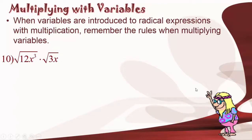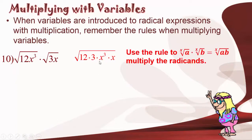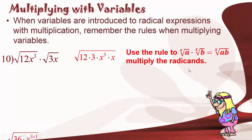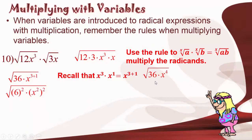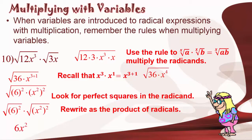Reviewing example number 10: we put the two radicals together and got 12 times 3 times x cubed times x. We used the multiplication rule where the radical of a times the radical of b — with the same index — equals the radical of ab. The indexes are the same, which is what allows us to multiply radicals. We found that x cubed times x equals x to the fourth, and the square root of 36 times x to the fourth are both perfect squares, so we got 6x squared.